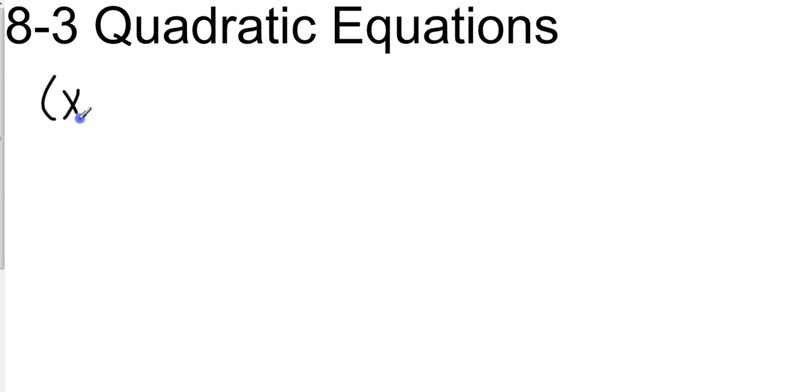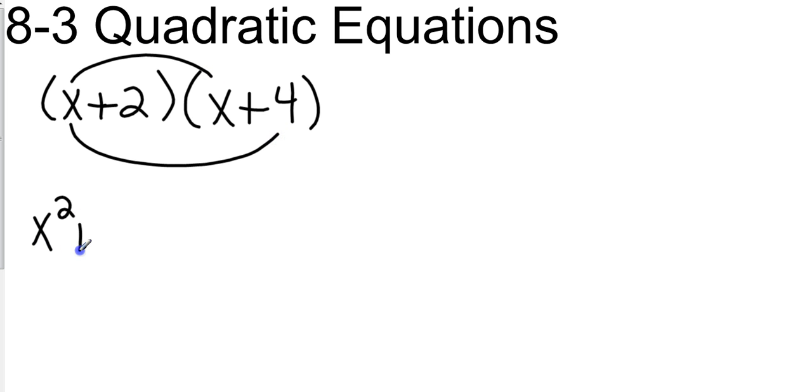We've already technically done quadratic equations. This is when we did the FOIL method. So if I did the FOIL method on this, I would take first times first, outside times outside, inside times inside, and then last times last.